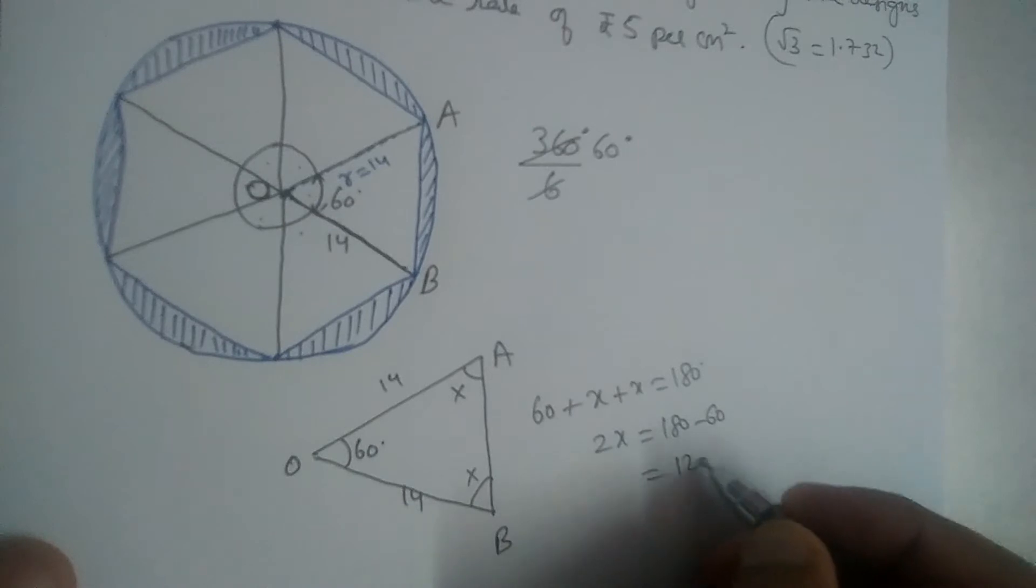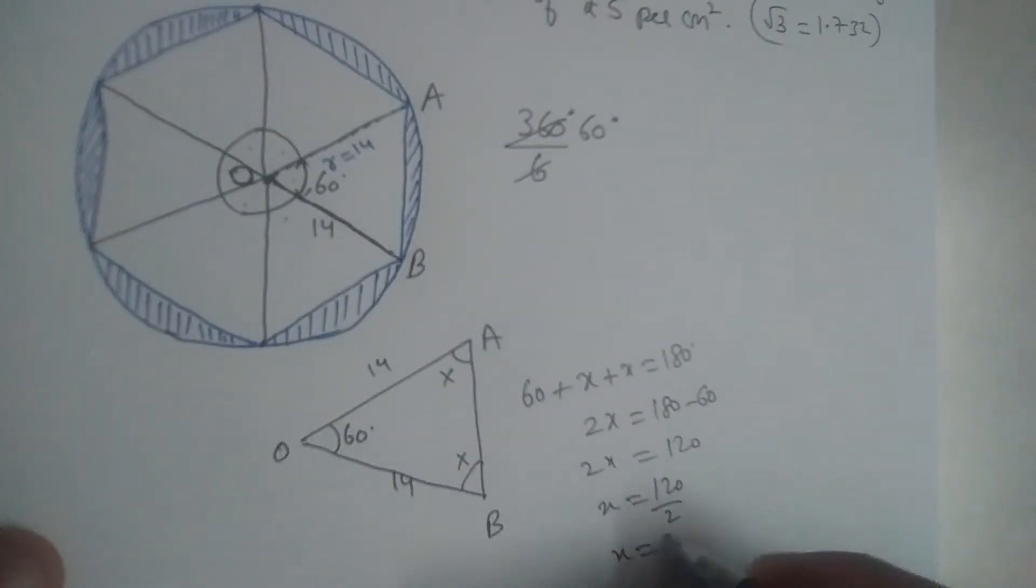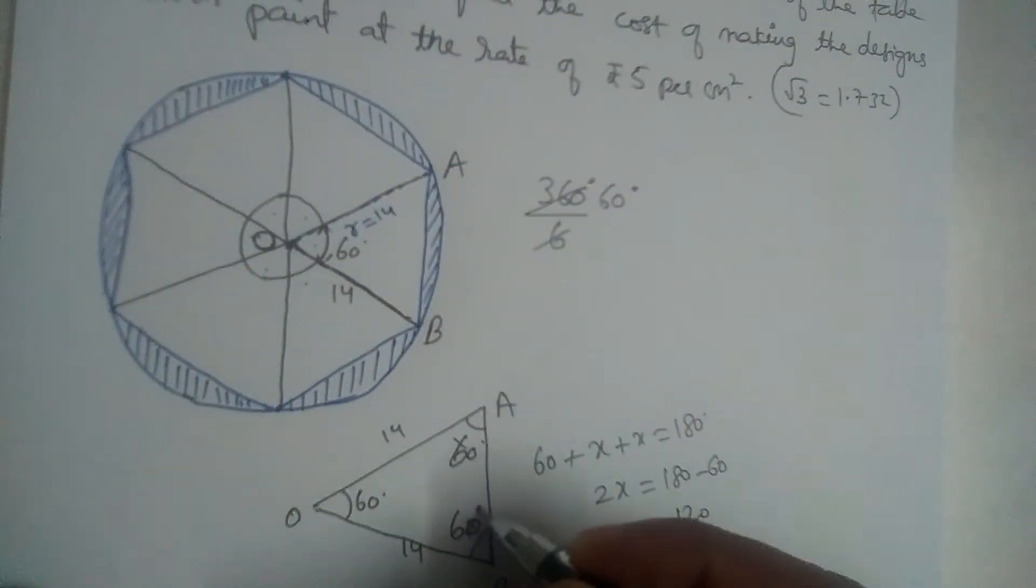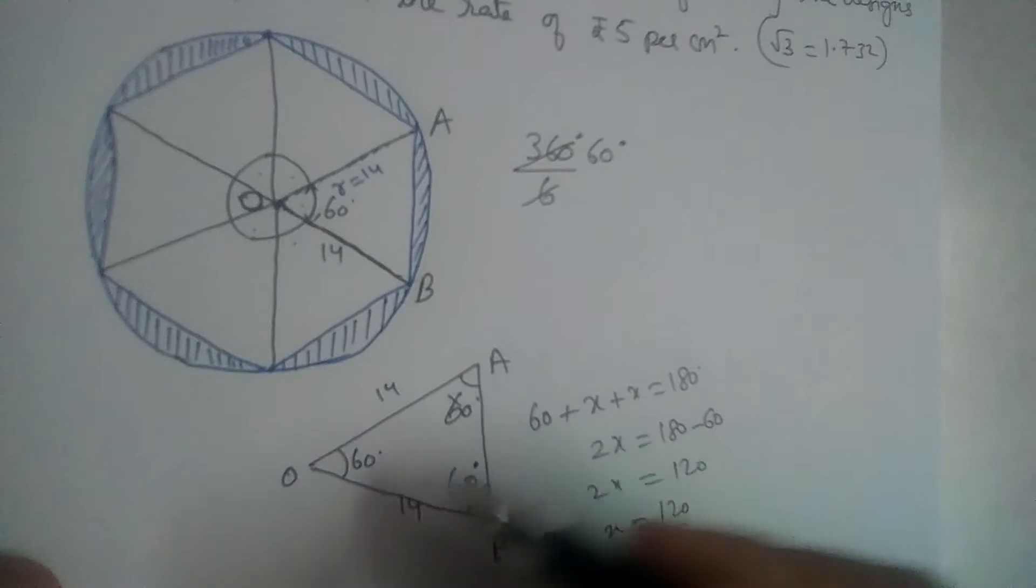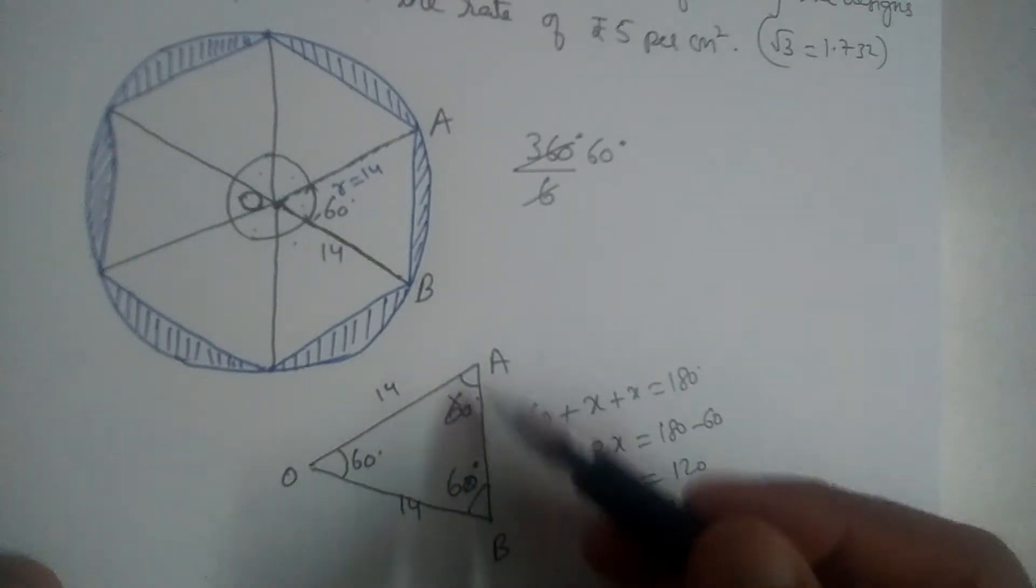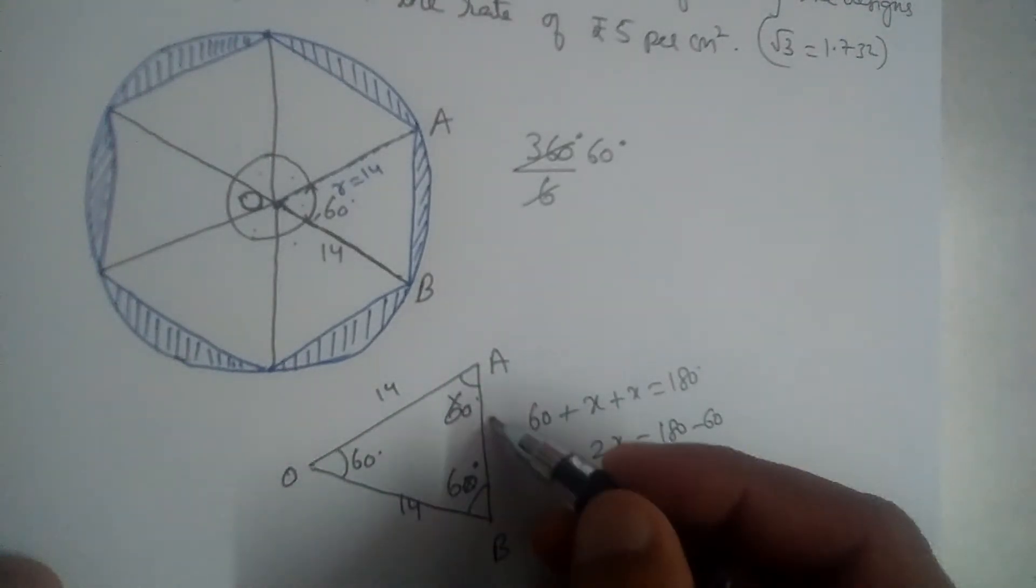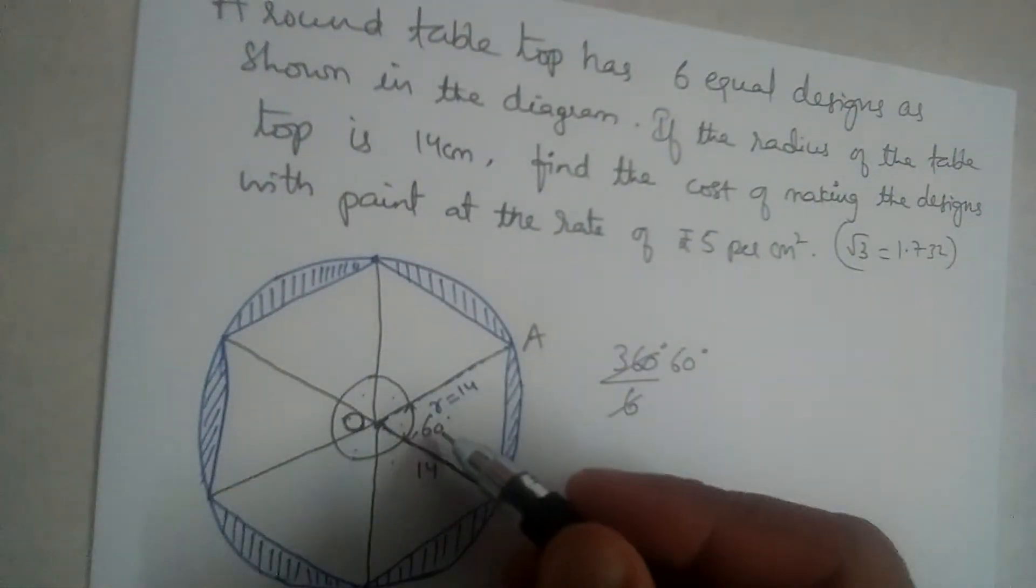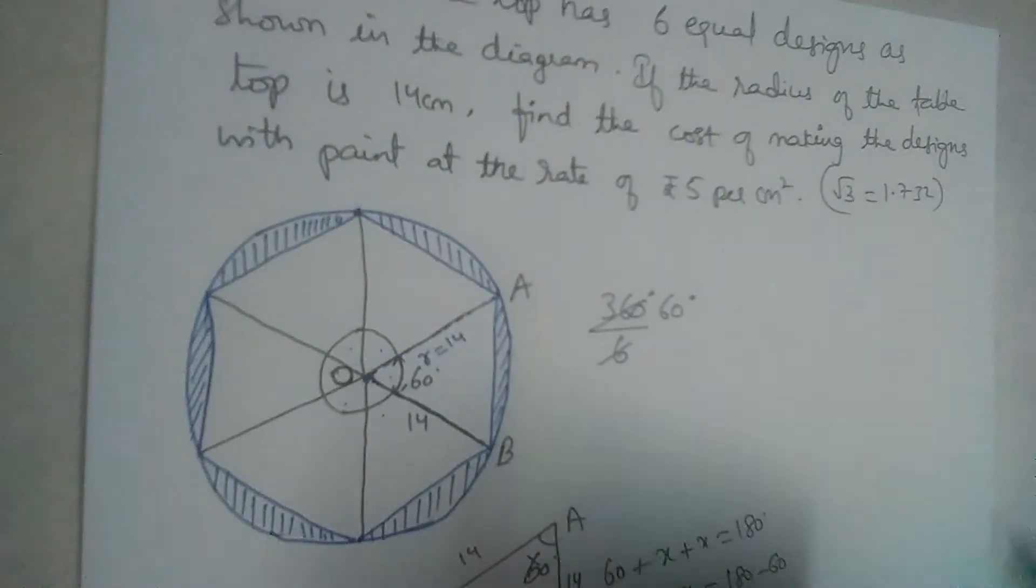And x is equal to 120 divided by 2, which is 60. So this angle is also 60, this angle is also 60. What does it mean? It means it is an equilateral triangle, so AB will also be 14. Now, each one is an equilateral triangle here.